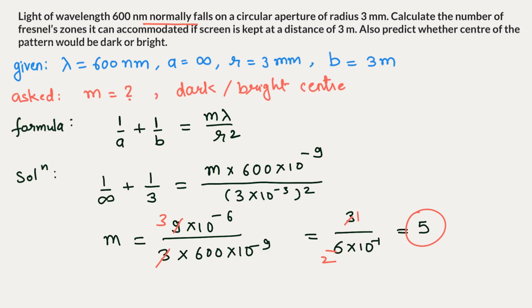The number of zones is 5. Now, as m is an odd number, obviously the nature of the center would be bright. So the answer is: bright center.